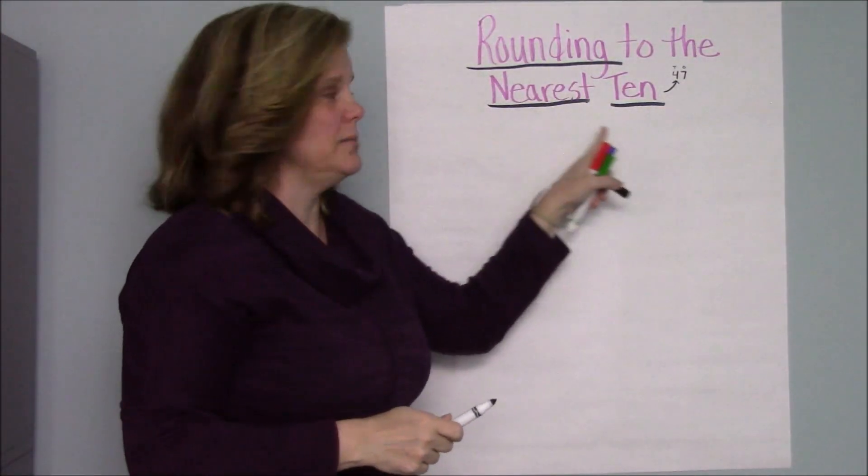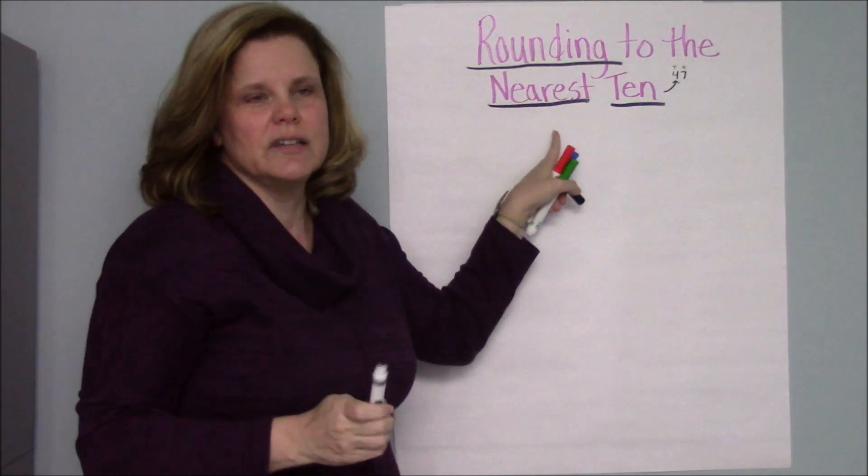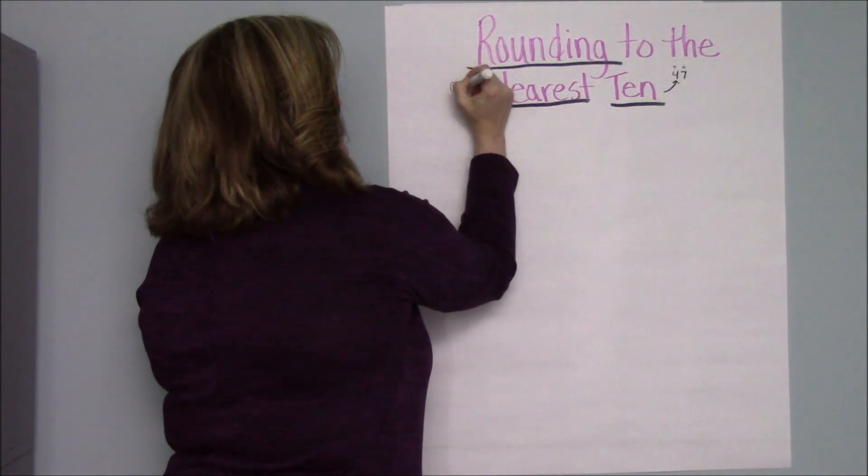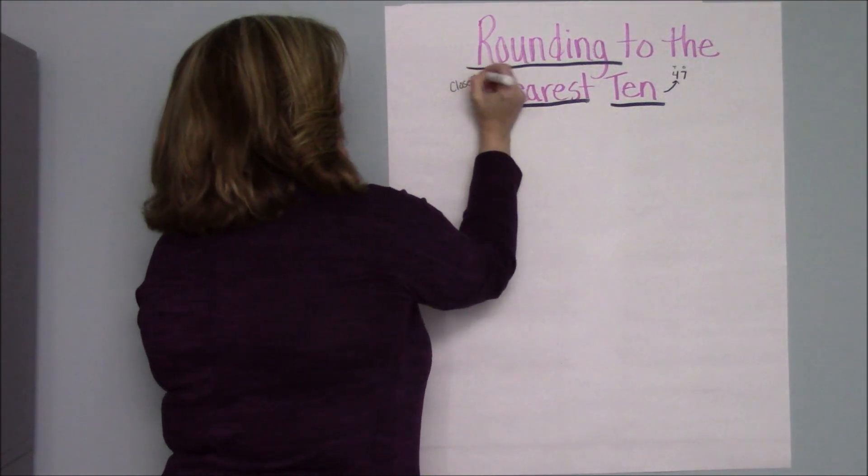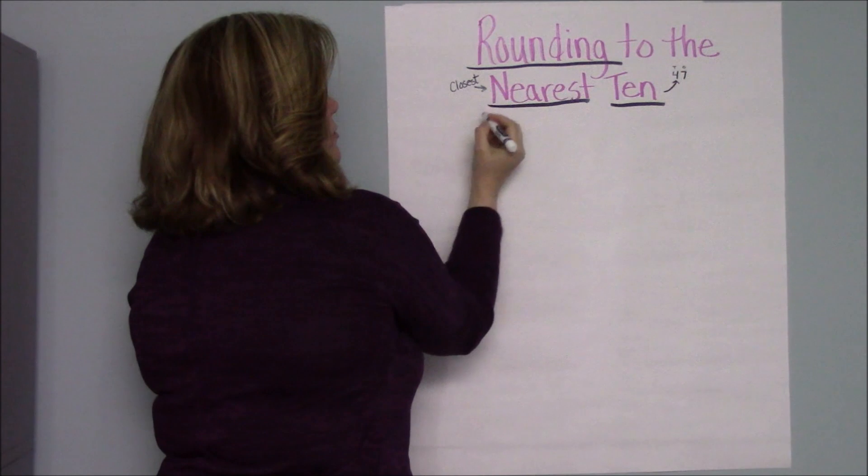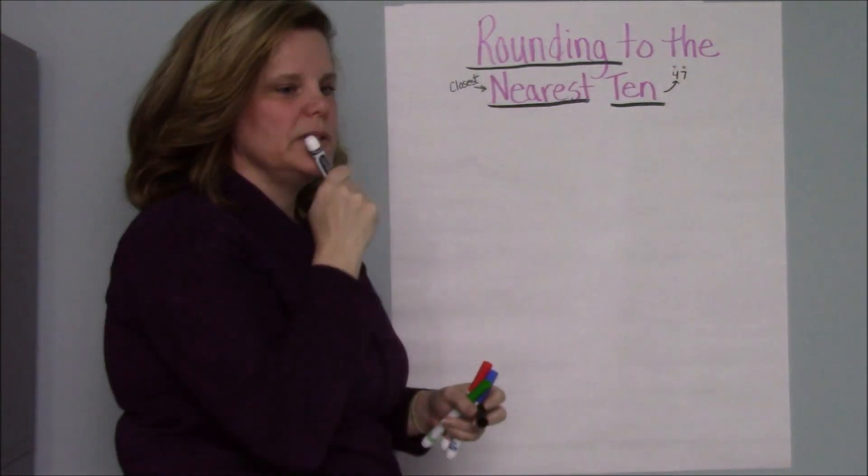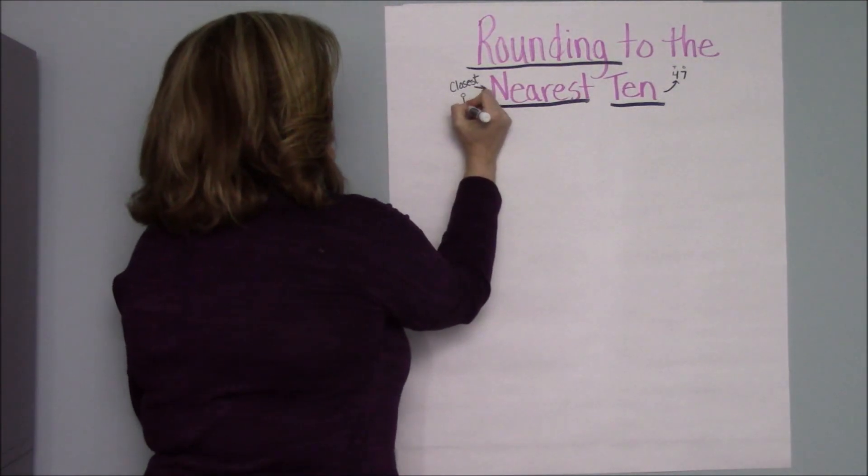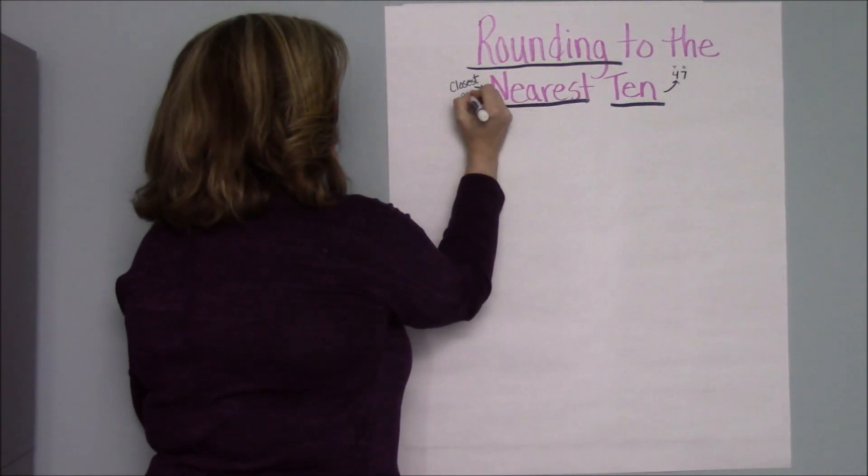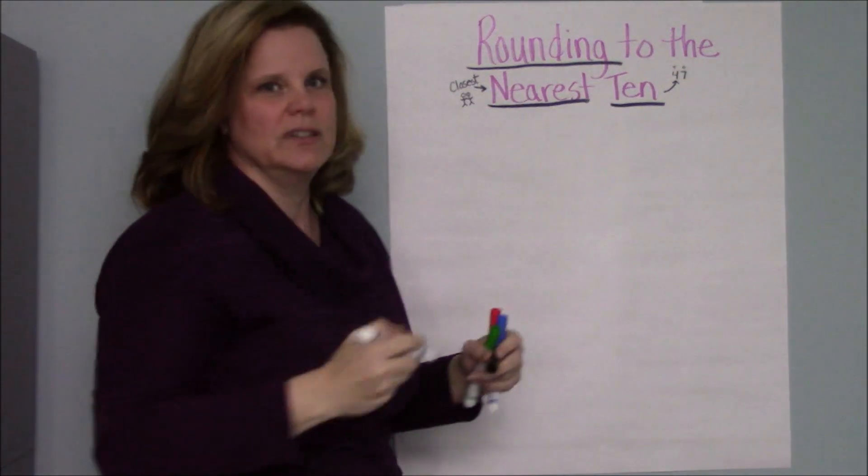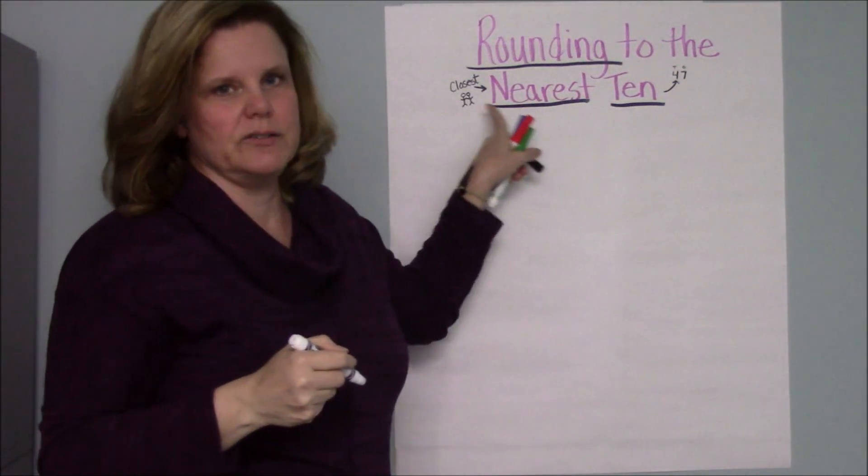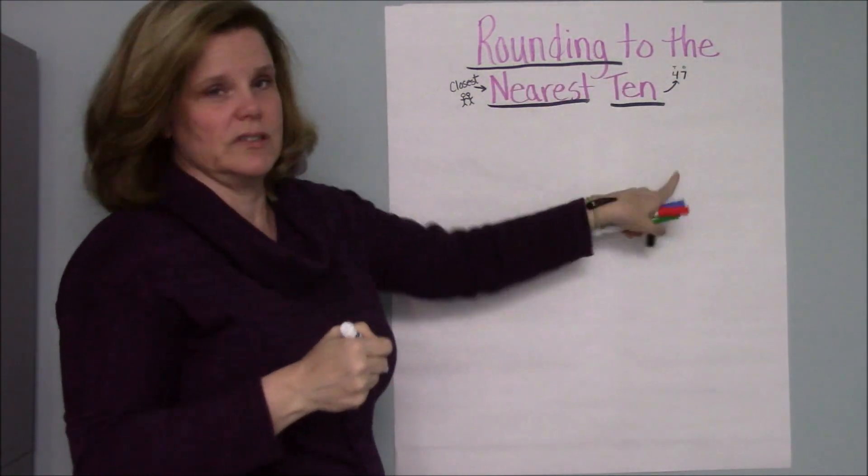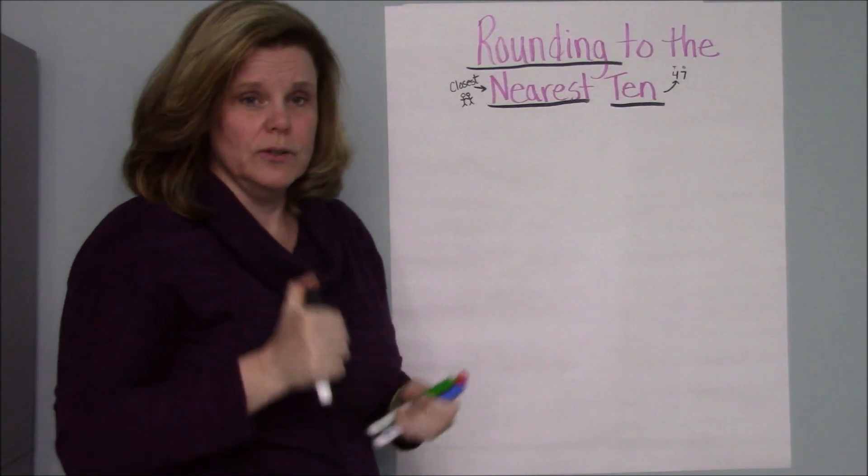Nearest ten then means the closest. Nearest means close. So right here I'm just going to write closest so you remember. And let me think what would be a good picture so we remember close. I'm going to put two people here standing right next to each other, super close. So you remember that nearest means closest. So we're rounding to the nearest ten, we're rounding to the closest ten. That's our goal for today.